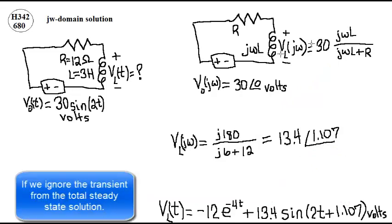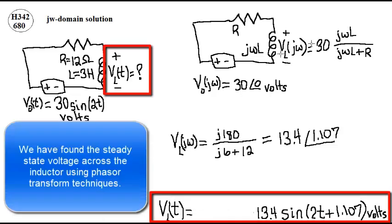If we ignore the transient term from the total solution, we have found the steady state voltage across the inductor using phasor transform techniques.